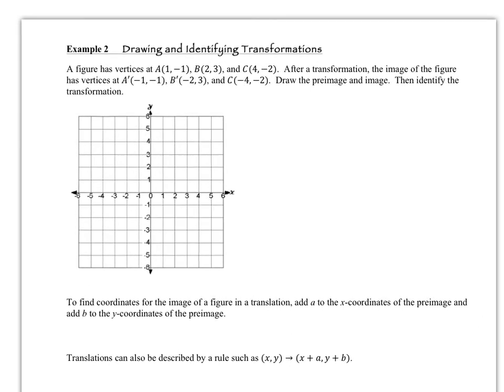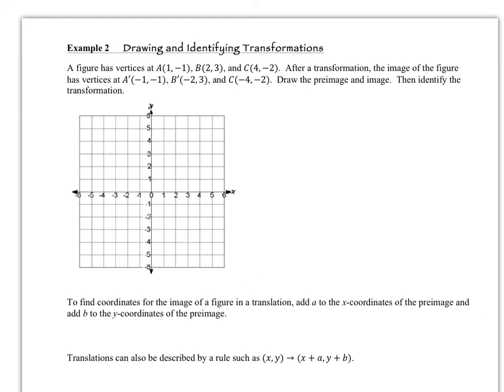On example two, we want to be able to draw the pre-image and the image and then identify the transformation. Let's start by graphing and labeling the points in the question. It tells us about a figure having vertices A, B, and C. So we're going to draw that, and then we have the image of the figure with vertices A prime, B prime, and C prime. Pause the video and draw the two figures, labeling each of the points.